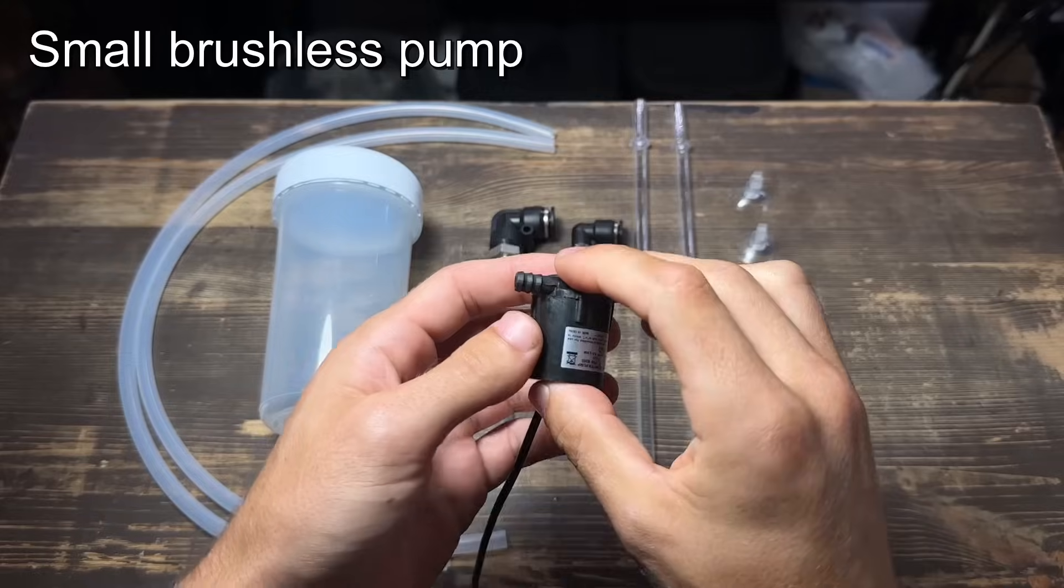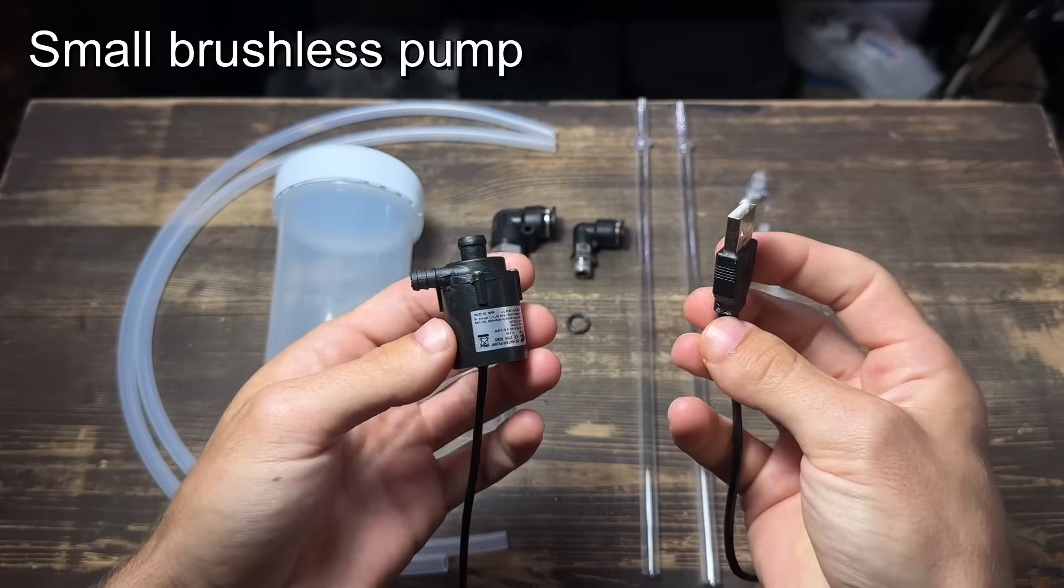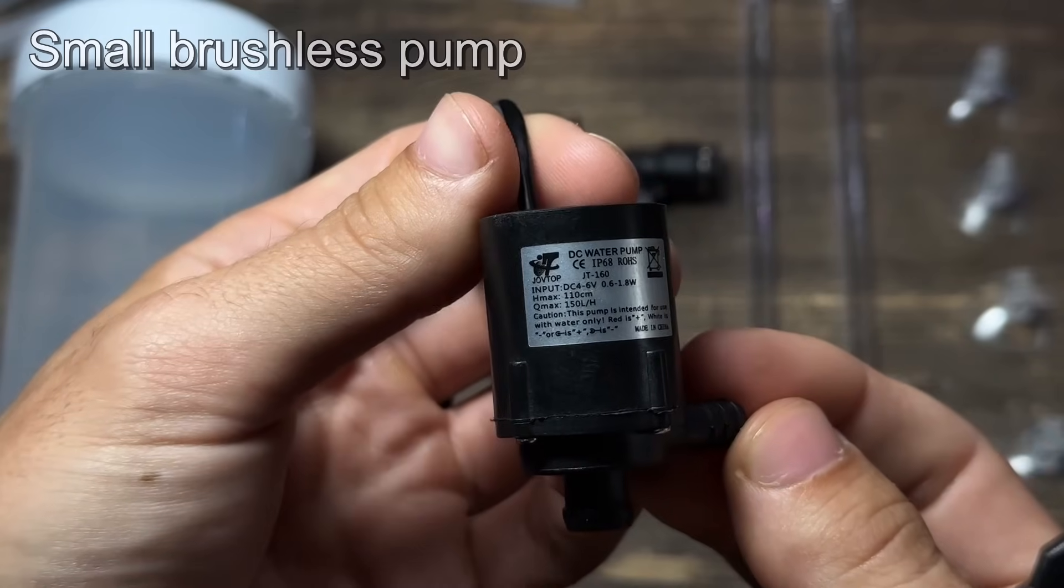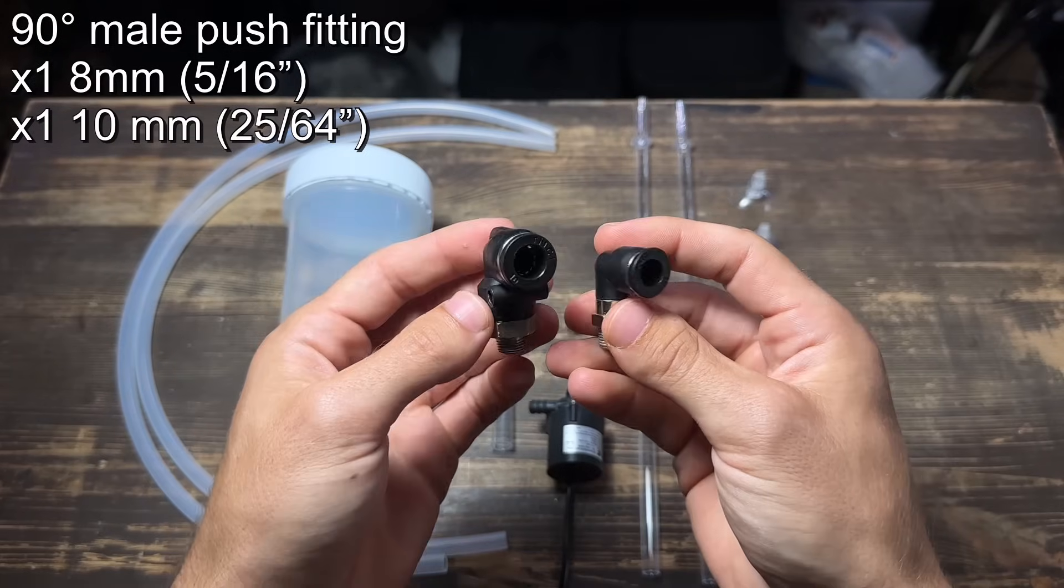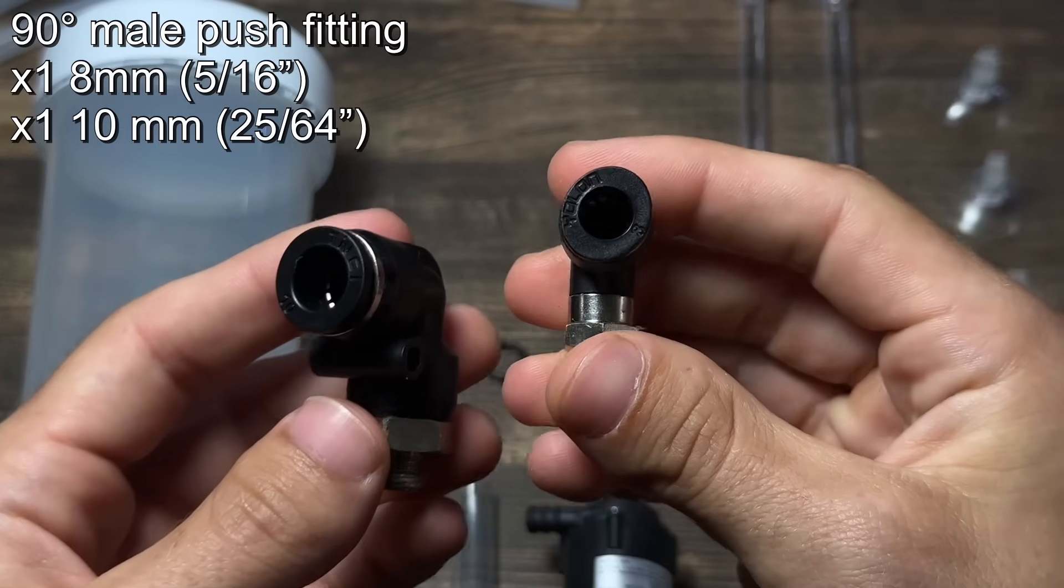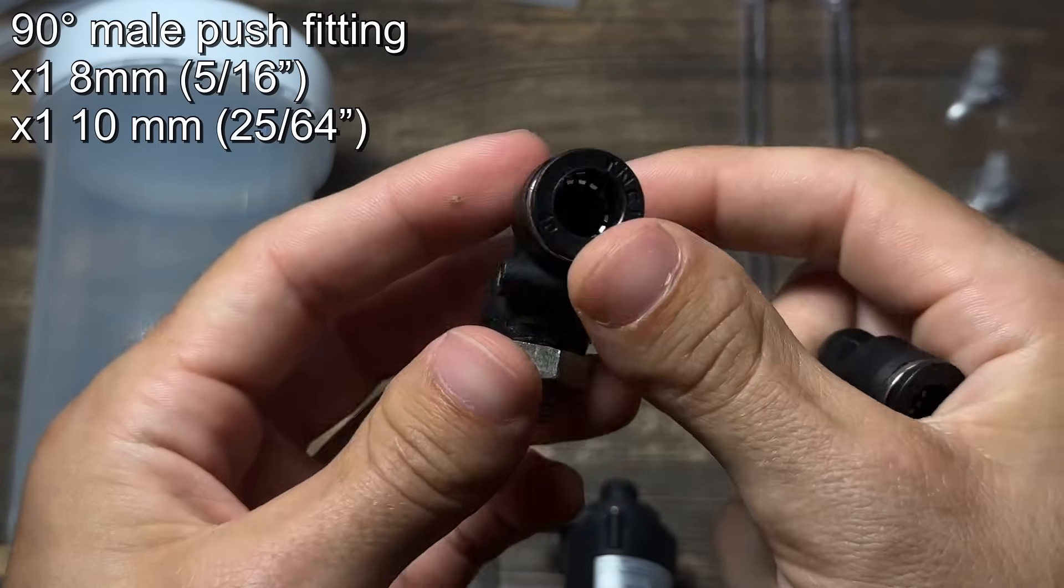Next is a small brushless water pump. This one is powered by USB and it only pushes 150 litres per hour. These 90 degree male push fittings is where the water will go in and out of the filter. You'll need one 8mm and one 10mm.